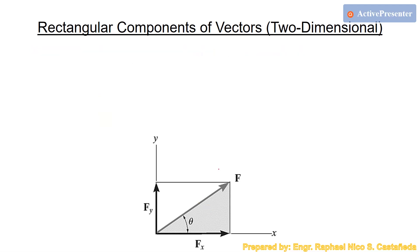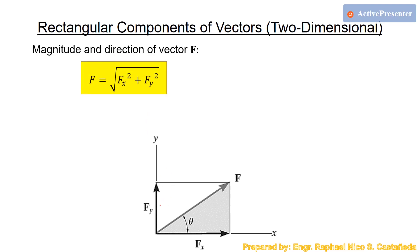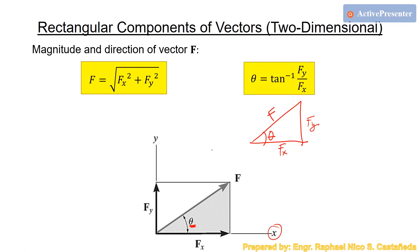There are also cases where you need to solve for the magnitude of F when the components are given. Apply the Pythagorean theorem: F = √(Fx² + Fy²), where Fy and Fx are the opposite and adjacent sides of theta, and F is the hypotenuse. To find the direction angle theta with respect to the x-axis, use: θ = arctan(Fy / Fx).